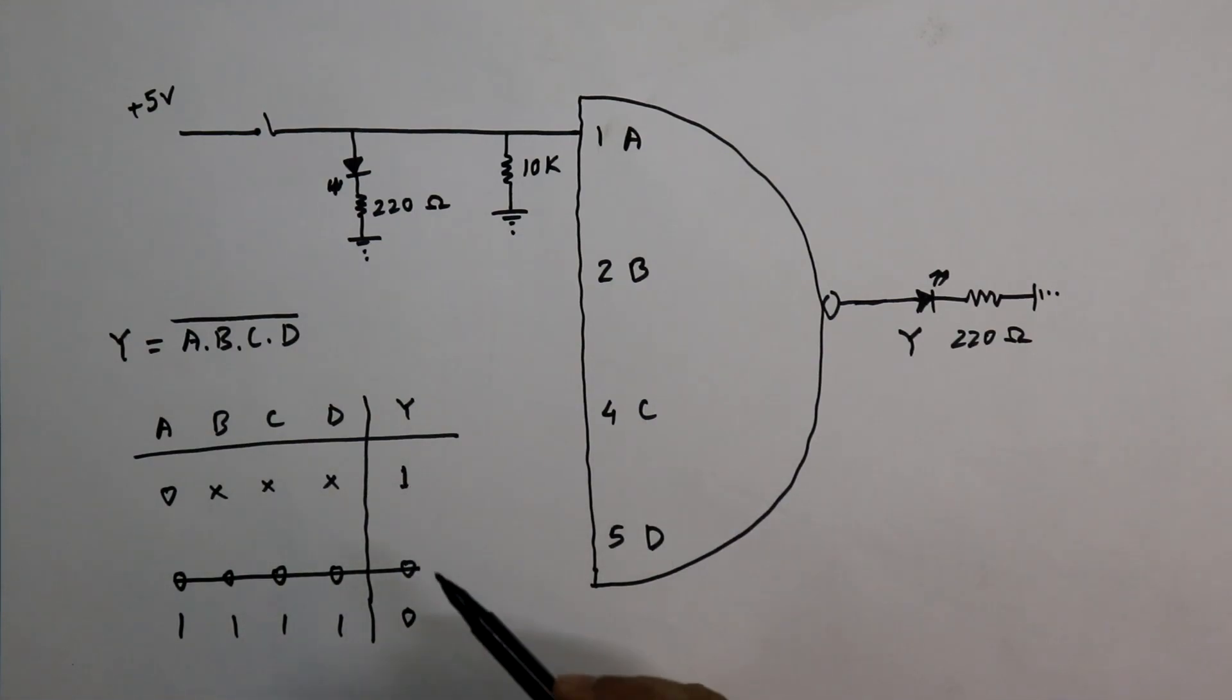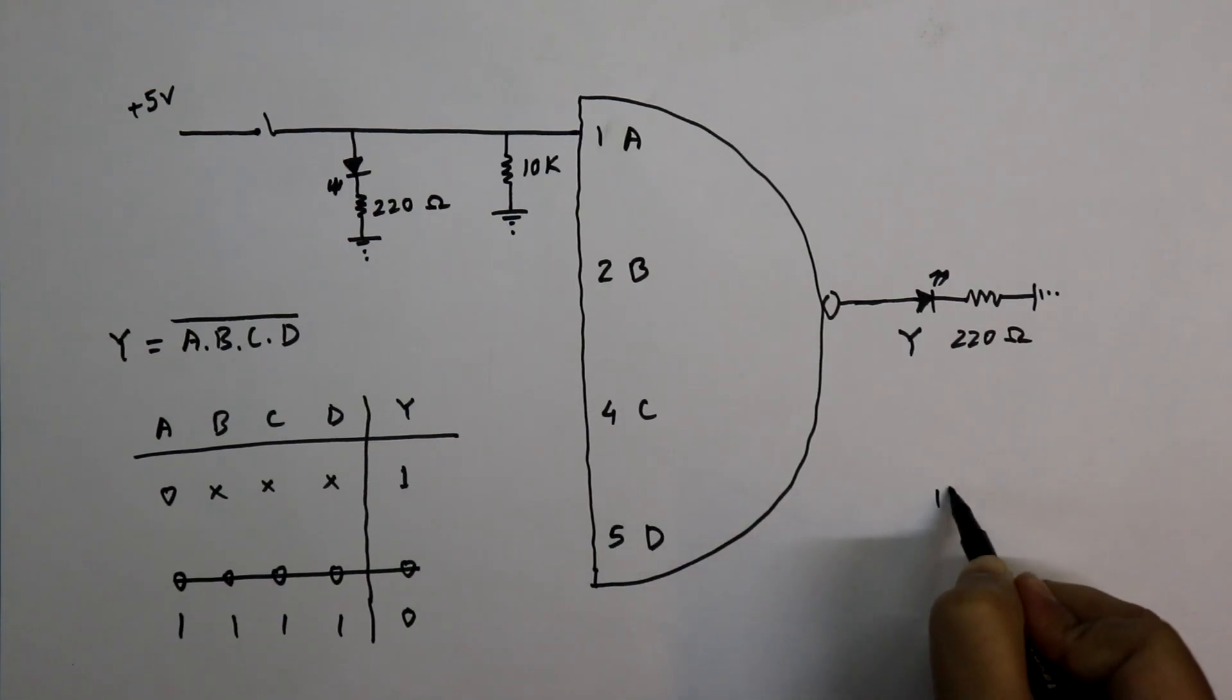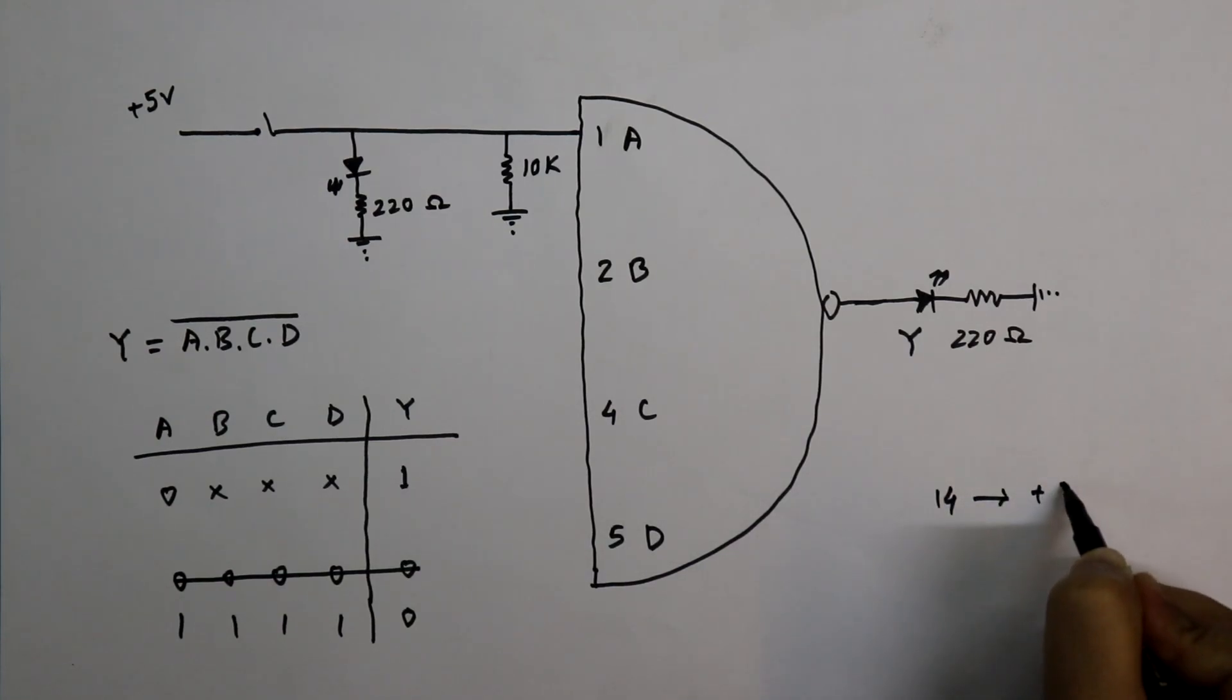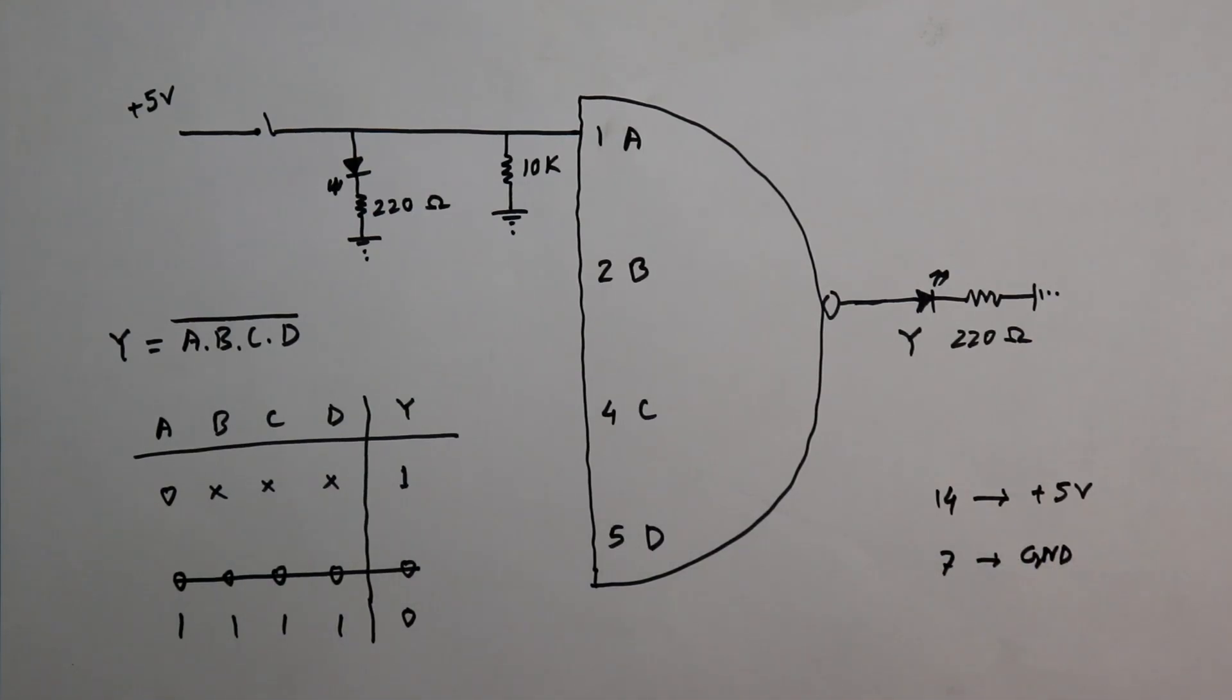And in any other case, we will get output as 1. Pin 14 should be connected to the plus 5 volt and pin 7 to the ground. So this is the circuit connection. Now we will see this in practical.